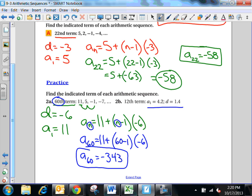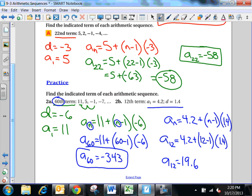So quickly if we did this one, I would say that the explicit formula is this 4.2 plus n minus 1 times 1.4. And then if I'm trying to find the 12th term, I'll do it, a 12 equals 4.2 plus 12 minus 1 times 1.4. And then I work that out. And I will get 19.6. So I get a 12 equals 19.6.